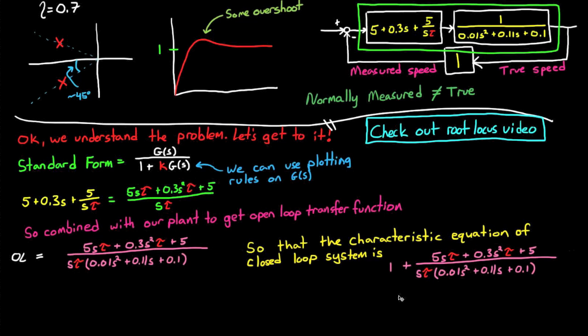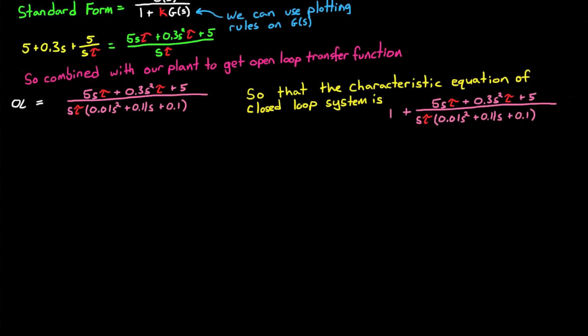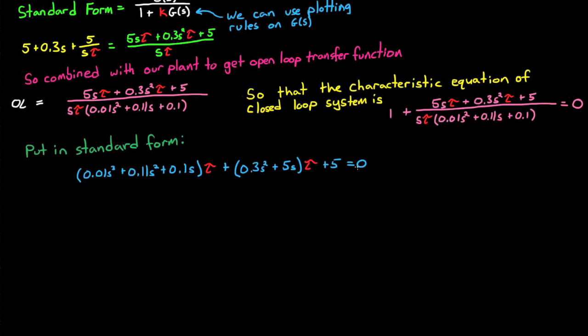But we can collect all of the terms with tau in them, and then divide out all the remaining terms to get our characteristic equation into the root locus standard form. I'm going to give this a second to sink in, because it's not obvious what we just did. We rearranged the closed loop characteristic equation and divided by some number of terms that didn't have tau in them. In our case, that was just the number 5. And at first you'd think we'd change the entire behavior of the transfer function.